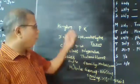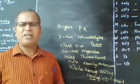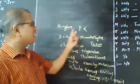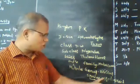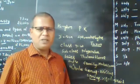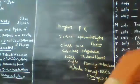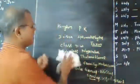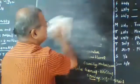Each unit of classification is said to be a taxon. The highest taxon is Kingdom and the lowermost taxon is Species. This is what we call biological classification.